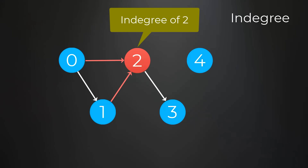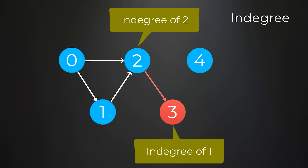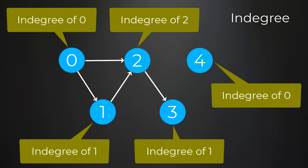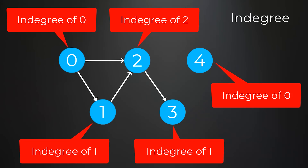For example, this node has two arrows pointing to it, so it has an indegree of 2. This node has one arrow pointing to it, so it has an indegree of 1. This node has no arrows pointing to it, so it has an indegree of 0. How does getting the number of indegrees for each node in a directed graph help us perform a topological sort? What these indegree counts tell us is how many dependencies a node has on any other nodes in the graph.